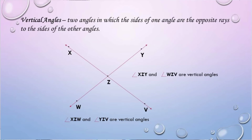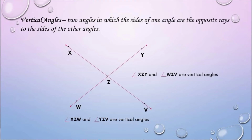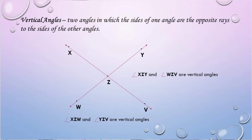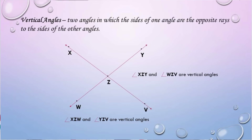Then we have vertical angles — two angles in which the sides of one angle are the opposite rays to the sides of the other angle. So angle XZY and angle WZV are vertical angles. Same with angle XZW and angle YZV, which are also vertical angles.